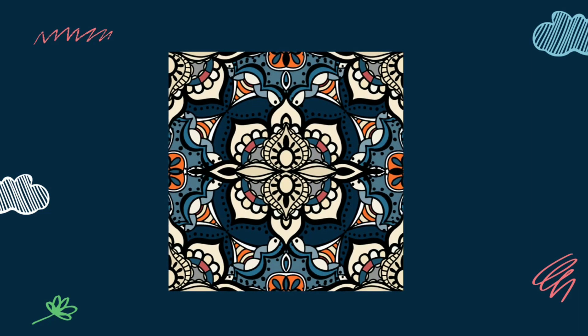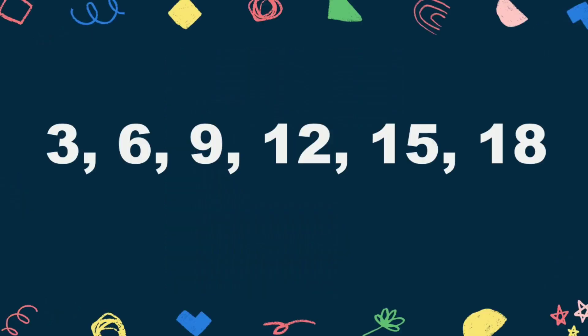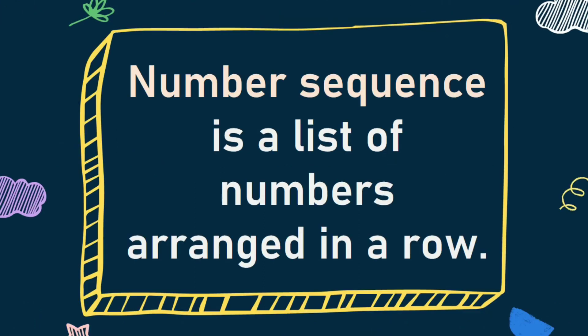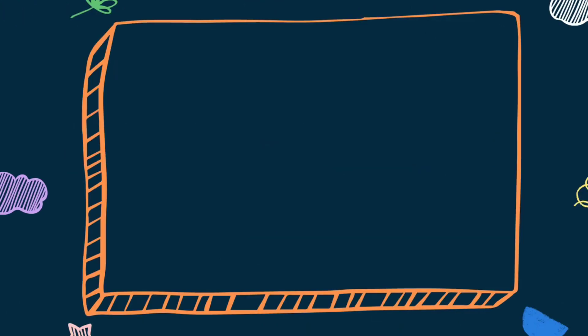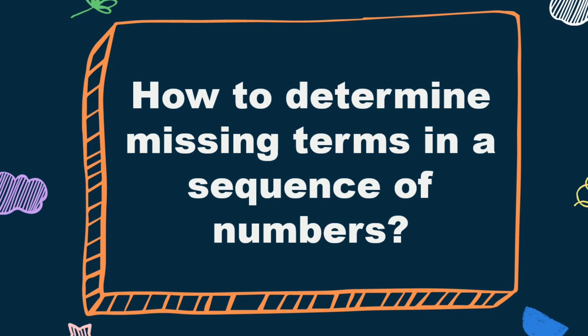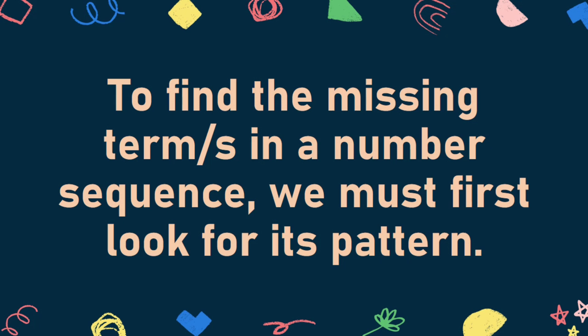Patterns can be complicated. Each element in a sequence is called a term. You may be wondering how to determine missing terms in a sequence of numbers. To find the missing terms in a number sequence, we must first look for its pattern.